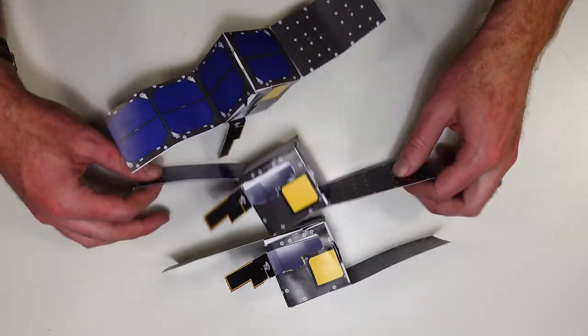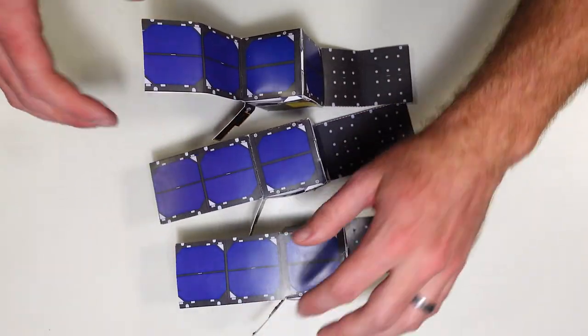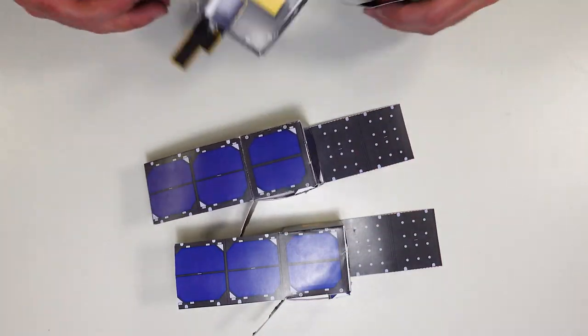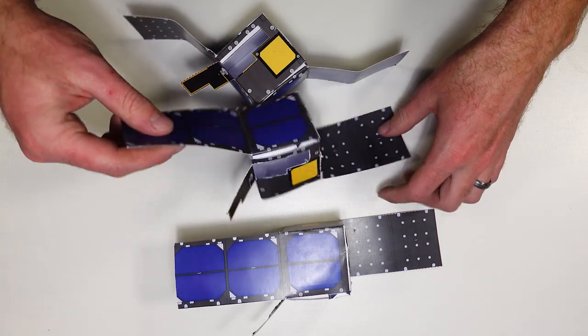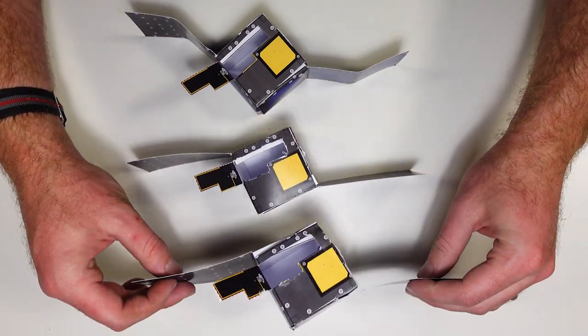Then we've got Binar 2, Binar 3, and Binar 4. Three identical CubeSats. Three sets of deployable solar panels and three homegrown deployable antennas.